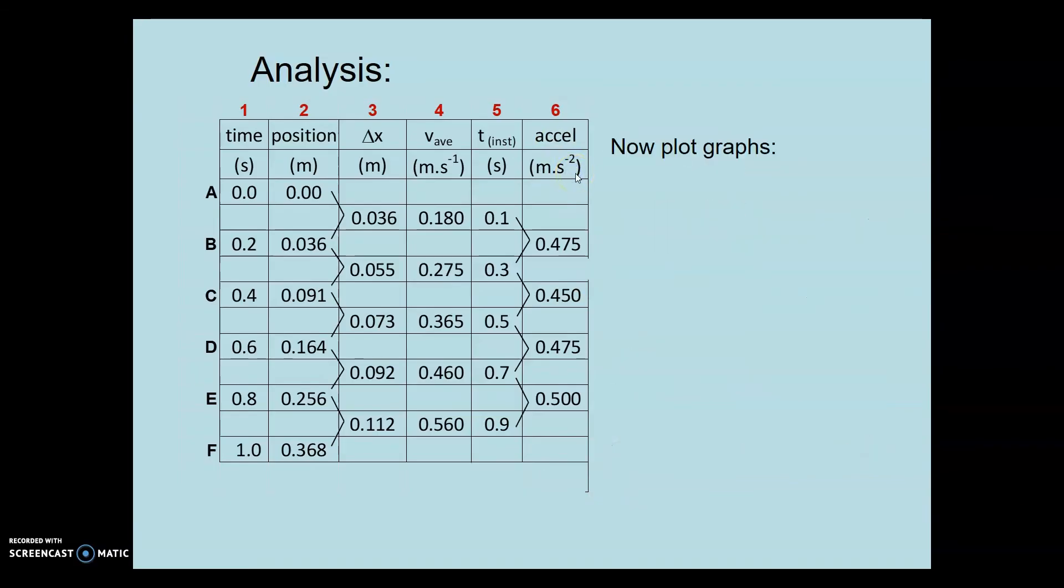Now we want to plot these on graphs. We want to see how the position changes with time. We plot column two versus column one. To get the displacement versus time graph and the velocity versus time graph, we plot column four versus column five.